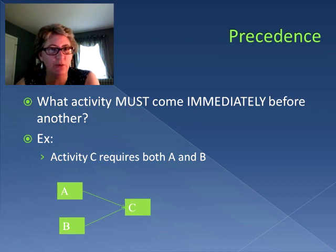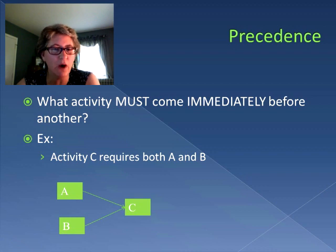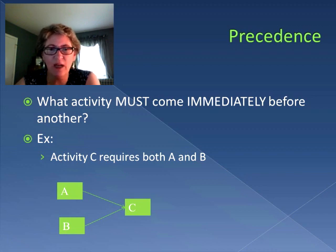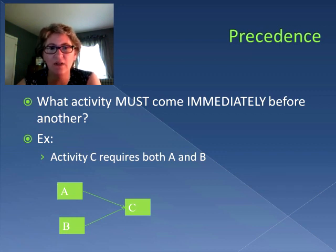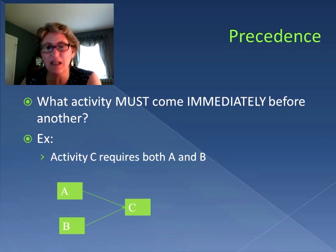A second important concept when dealing with process flow diagrams is precedence. Precedence implies what activity must come immediately before another. It tells us what activities are required to be completed before another activity can begin. For example, activity C has two activities that come right before it — activity A and activity B — and both are needed in order for activity C to start. That's what we mean by precedence: activities that precede other activities.